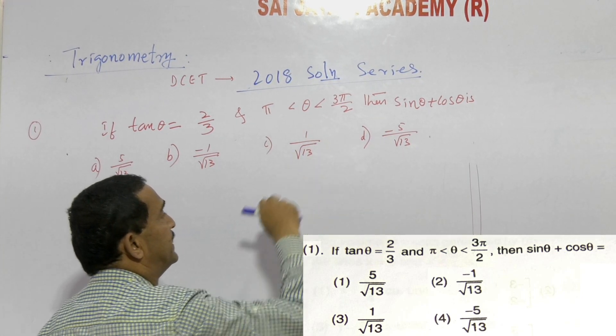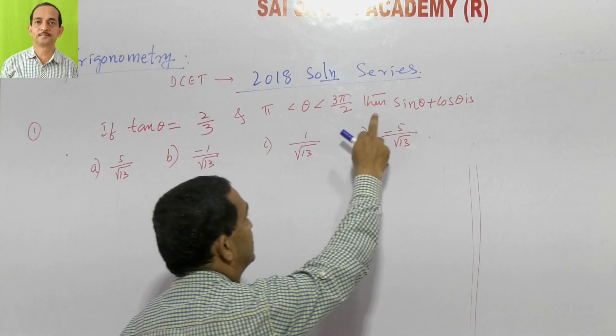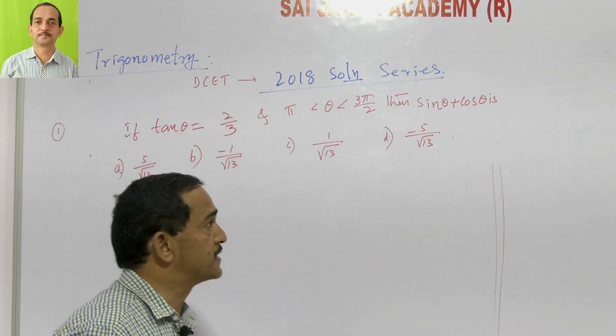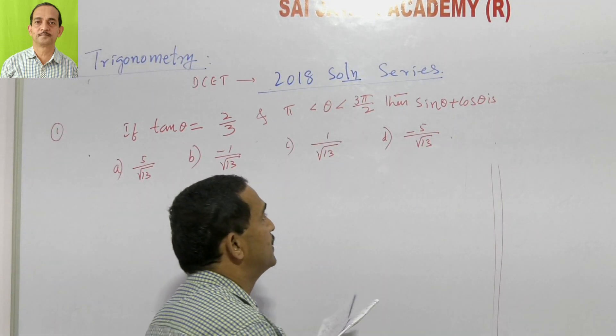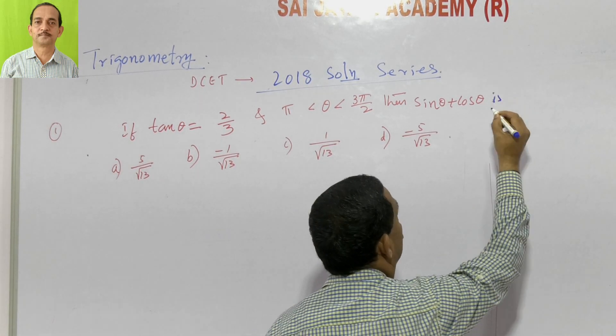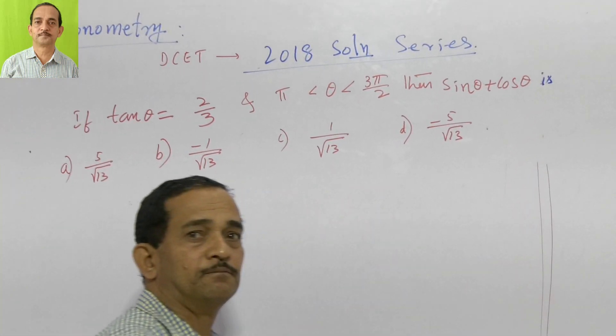3π/2 means 270 degrees. So 180 degrees to 270 degrees means it lies in the third quadrant. Then find the value of sin theta plus cos theta. What is the value of sin theta plus cos theta? This is the question.